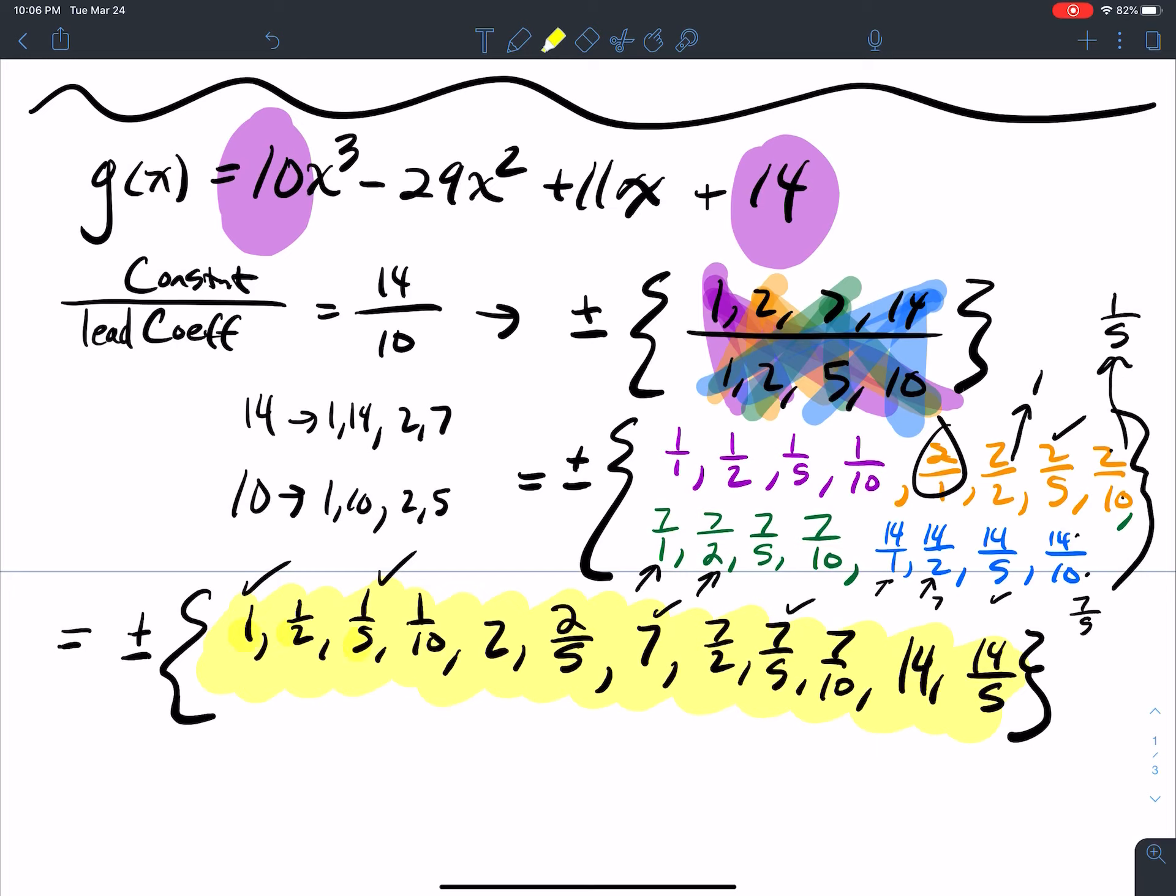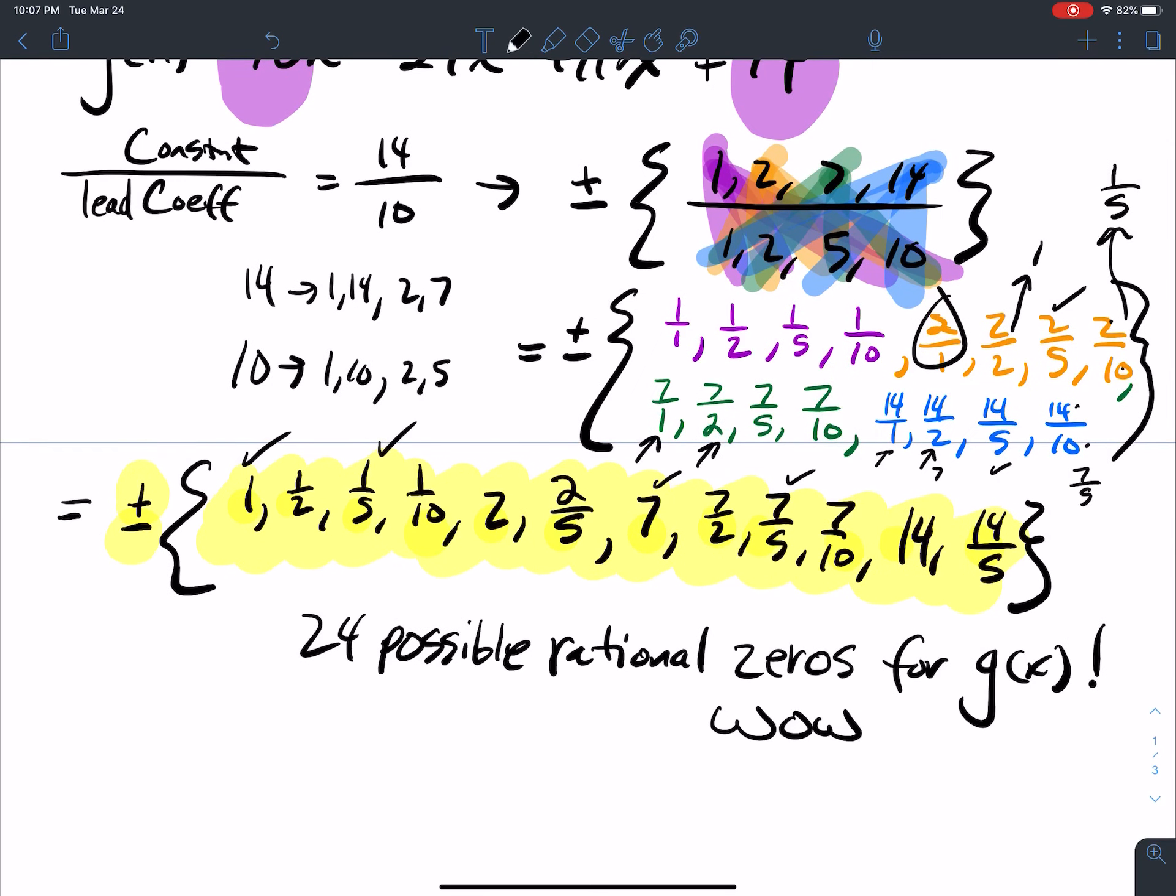Looks like 1, 2, 3, 4, 5, 6, 7, 8, 9, 10, 11, 12. But it's not just 12, because there's positive 12 and a negative 12. So there's actually 24 possible rational zeros for g of x. Wow. Amazing, right? Pretty cool.